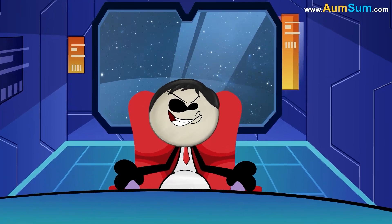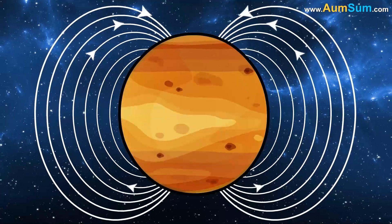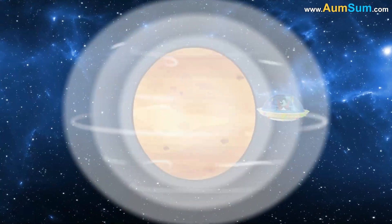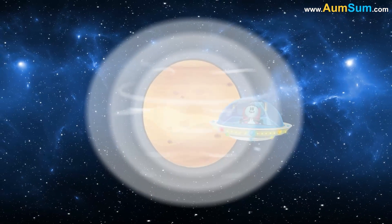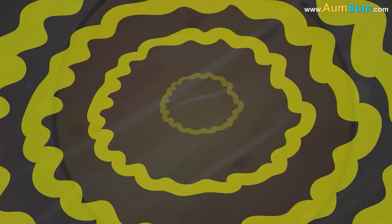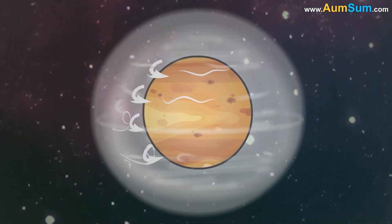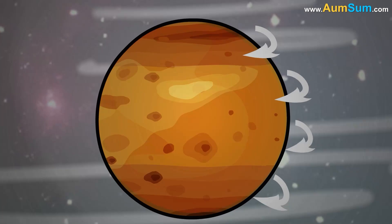But AumSum knew there were other possibilities too. Venus didn't have a strong magnetic field like Earth, and its atmosphere was super thick, thicker than a hundred fluffy blankets. Maybe over millions of years, the heavy atmosphere created strong winds that slowed down Venus' rotation, and eventually made it spin the other way.